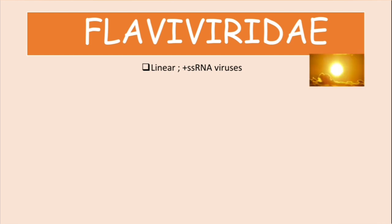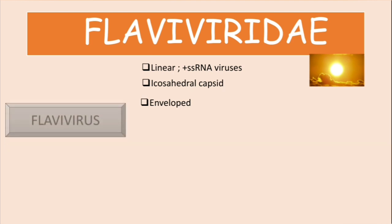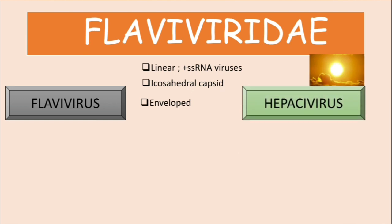We represent positive-sense single-stranded RNA viruses using the sun symbol. Viruses in the Flaviviridae family have an icosahedral capsid and an envelope. Under the Flaviviridae family there are two main genera: Flavivirus and Hepacivirus. Under Hepacivirus we have the hepatitis C virus (HCV) and hepatitis G virus (HGV). Hepatitis viruses are not related taxonomically, which is why C and G are found under Flaviviridae.